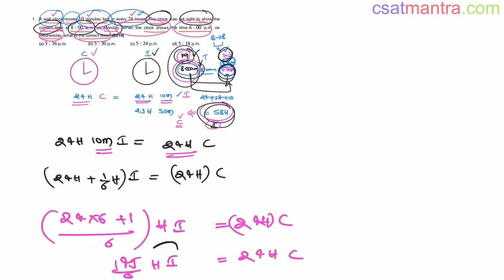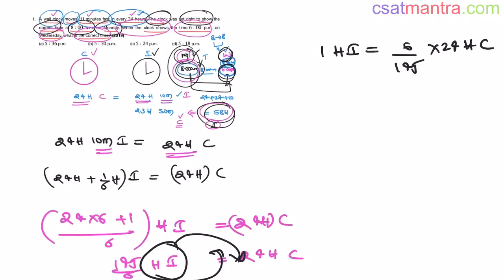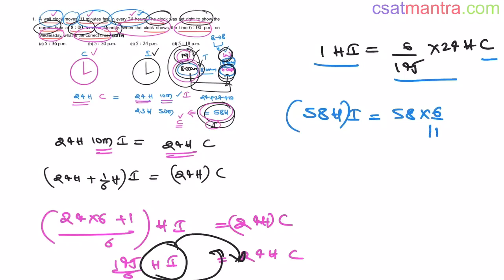I want to know 1 hour in the incorrect clock. So, 1 hour in the incorrect clock equals (6/145) × 24 hours in the correct clock. Now, 58 hours in the incorrect clock equals 58 × (6/145) × 24 hours in the correct clock.